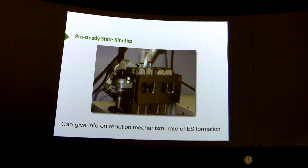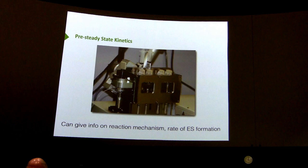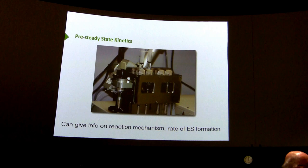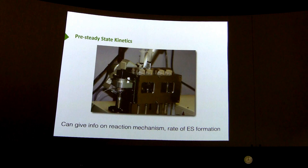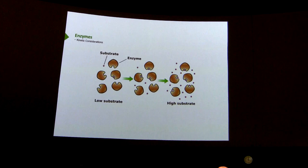Does that mean the green part of the graph is of no use? For our purposes we're not going to consider it, but there are people very interested in that region — they study what's called pre-steady state kinetics. Pre-steady state kinetics requires measuring things very, very rapidly, on the order of milliseconds, because that helps understand things like the rate of formation of the ES complex and mechanism of reaction. In pre-steady state kinetics we see rapid changes in ES concentration and free enzyme concentration; those things are fairly constant in steady-state kinetics.